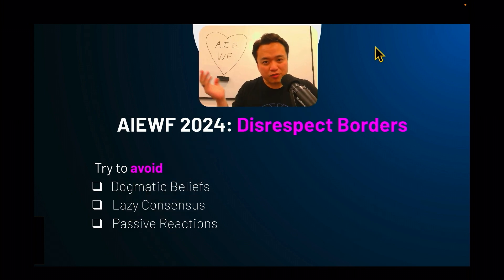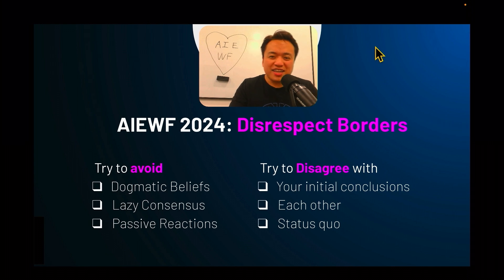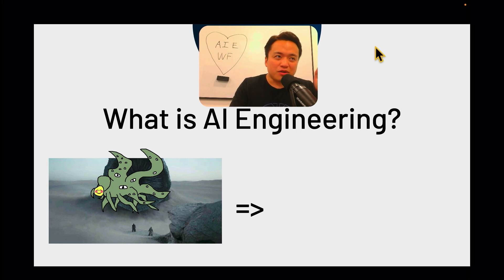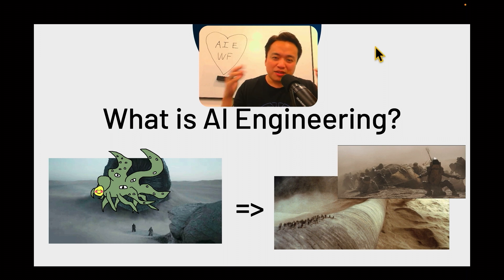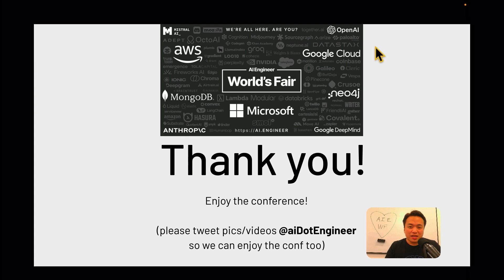My message to everyone at the World's Fair is to try to disrespect borders a little bit. Try to avoid your own dogmatic beliefs, lazy consensus of other people, or passive reactions. In other words, try to disagree more — disagree with your own conclusions, disagree with each other productively, and disagree with the status quo. I think there you'll find that this conference becomes more of a useful landmark in your careers, rather than just a party. My final analogy: AI engineers are the kind of person that looks at Shoggoth and sees not a monster that cannot be tamed, but wants to turn it into mass rapid transit — a force of nature they want to turn into tools useful for people.